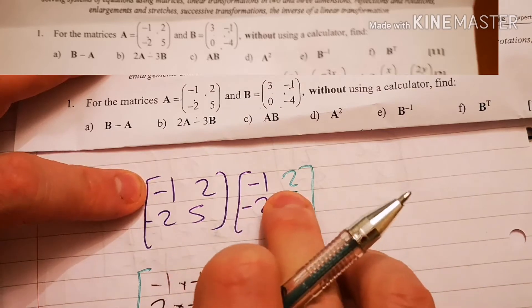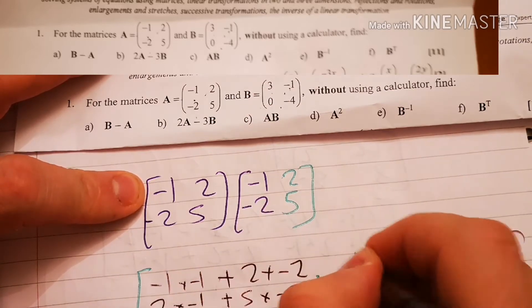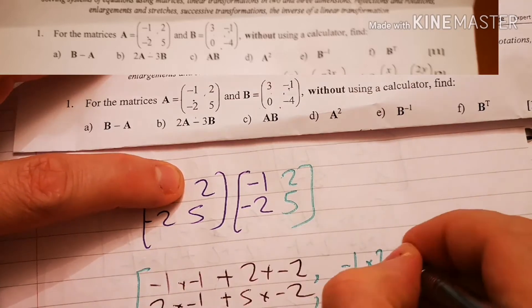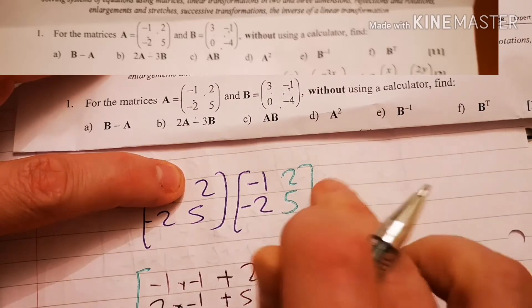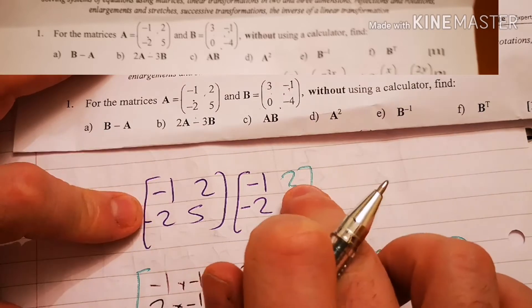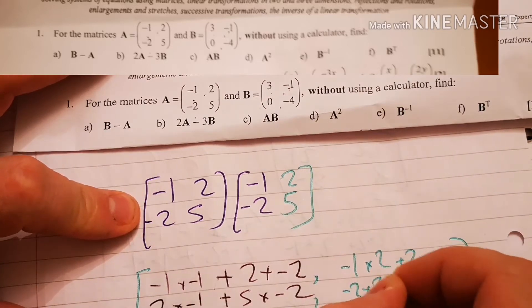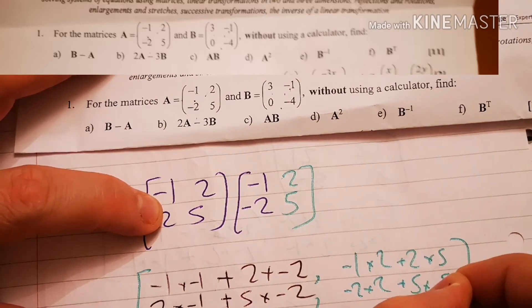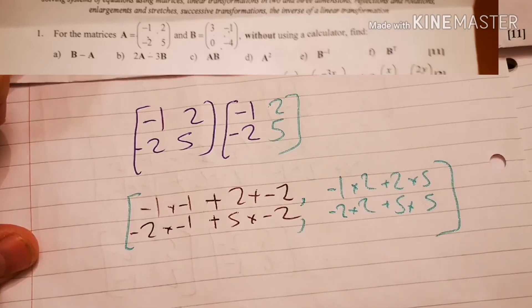I know it's minus 1 times 2. And then 2 times 5. And then we have to go to the second part, which is minus 2 times 2. And then plus 5 times 5. Okay, and I've just got to sort all these bits out.